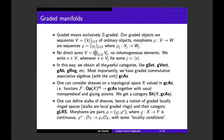If you have a nice category you can consider sheaves on some topological space valued in that category — I simply mean functors from the category of open sets (contravariant) to this category. If this category is nice enough I can impose the usual monopresheaf and gluing axioms, obtaining a category of sheaves on topological space X valued in graded commutative associative algebras. With sheaves you can define stalks, and with stalks you can define graded locally ringed spaces, which are sheaves valued in graded commutative associative algebras such that all stalks are graded local rings.